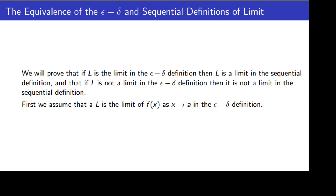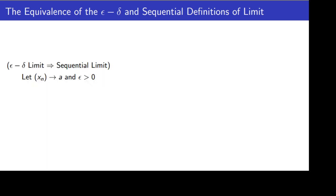First, we're going to assume that L is the limit of f of x as x goes to A in the epsilon-delta definition. We will start by picking an arbitrary sequence converging to A, call it xₙ, and we'll pick an epsilon greater than zero. We will be done if we can show that there is a capital N such that the absolute value of f of x sub n minus L is less than epsilon. If we can show that using this arbitrary sequence and this arbitrary epsilon, then we've proved that every sequence that converges to A has f of that sequence converging to L. That's the goal.